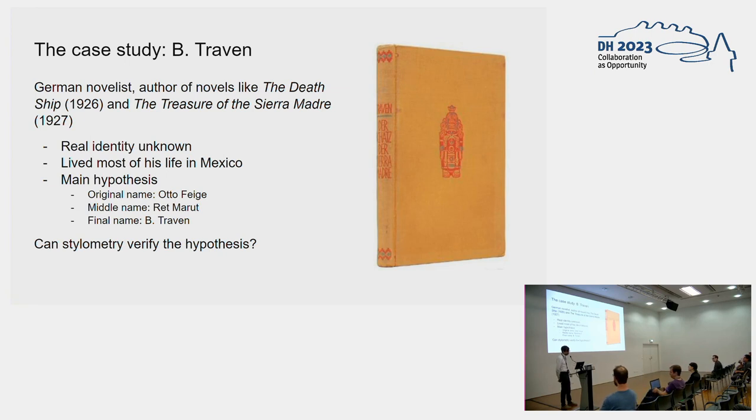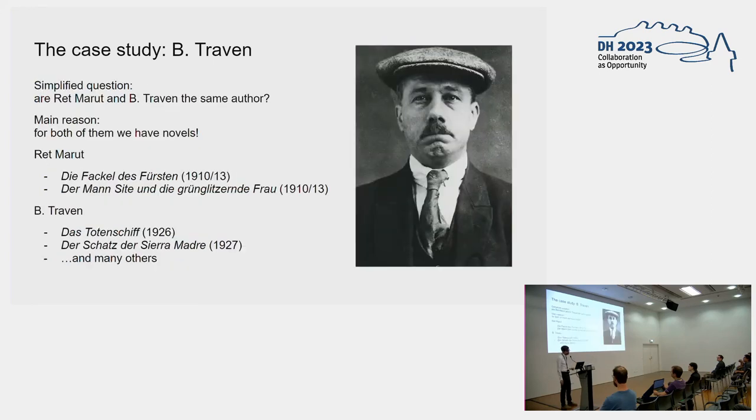Then Rett Marut disappeared and after his disappearance, B. Traven emerged. The theory is that these three people are actually the same person. What we want to do is verify this hypothesis using stylometry. What I will do today is focus on a slightly simpler question: are Rett Marut and B. Traven the same person?